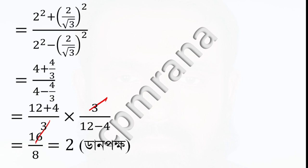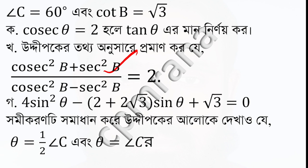We got to use 4, 2, 4, and then we got 4 there by 8. So 8 over 2 is 4. Now let's check out the equation: 4 sin squared theta minus 2 plus 2 root 3 sin theta plus root 3 equals 0.